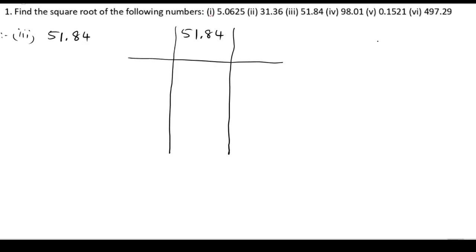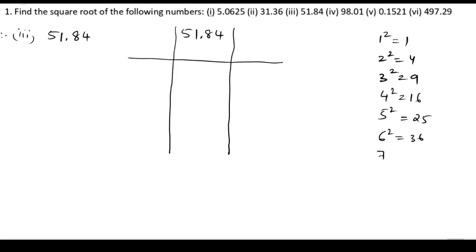We know the squares: 1 squared is 1, 2 squared is 4, 3 squared is 9, 4 squared is 16, 5 squared is 25, 6 squared is 36, 7 squared is 49, 8 squared is 64. The nearest number to 51 is 49. So 7 into 7 gives 49.